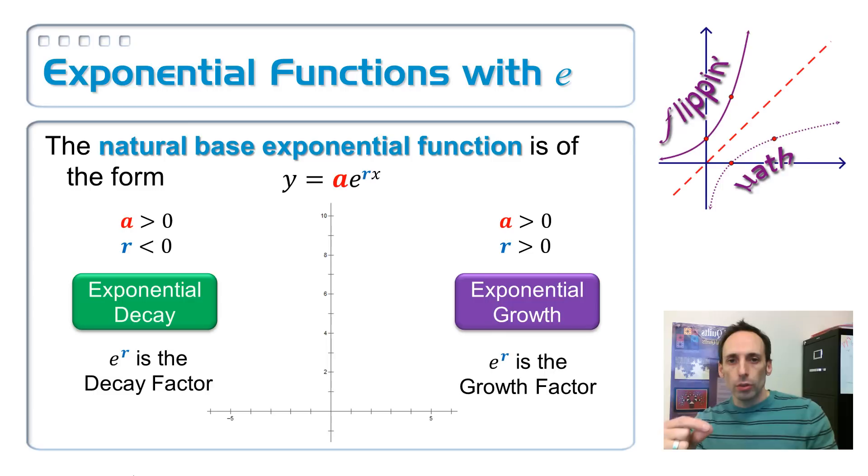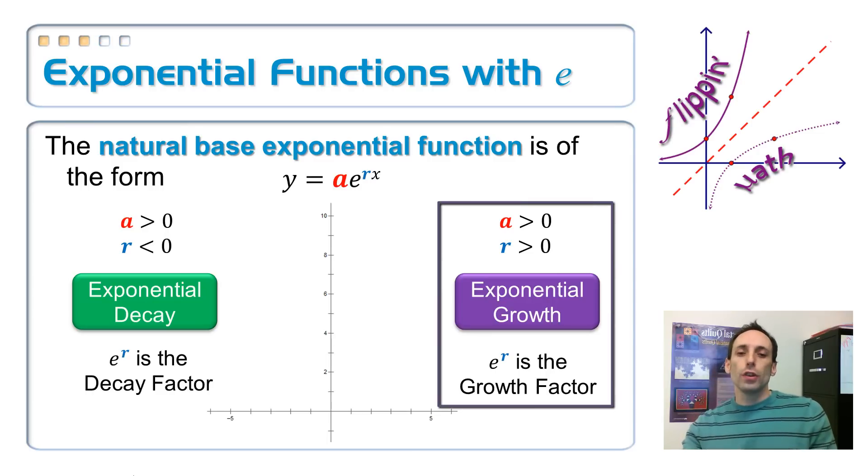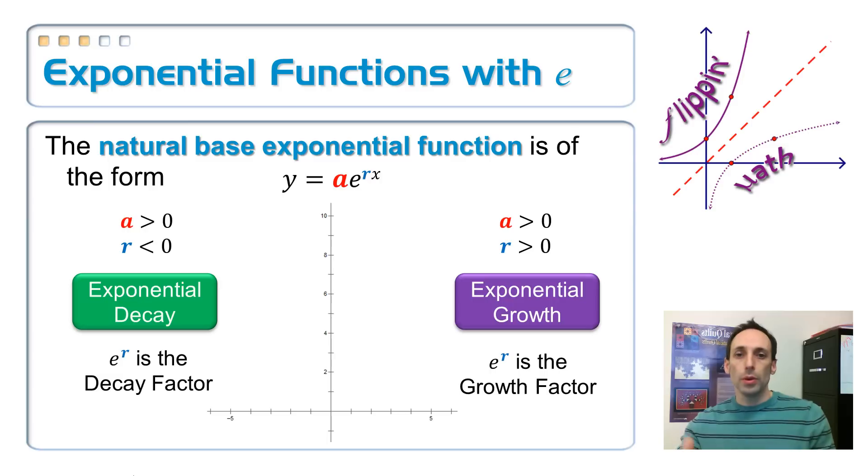And that R value, depending on what it is, is going to determine if this is an exponential growth or decay function. So on the right hand side here, if your R value is positive, if it's a positive number, this is going to be exponential growth. And the reason why is because if your base is bigger than one, then it's always exponential growth. So E to any positive power is going to be bigger than one.